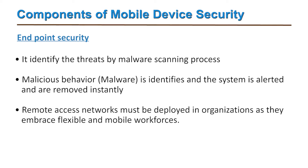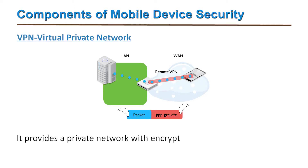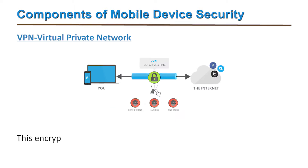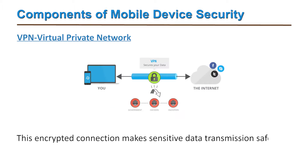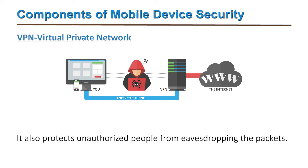Remote access networks must be deployed in organizations as they embrace flexible and mobile workforces. The second component is virtual private network (VPN). As the name suggests, it provides a private network with an encrypted internet connection to safeguard devices from unauthorized access. This encrypted connection makes sensitive data transmission safer and also protects against eavesdropping of packets.